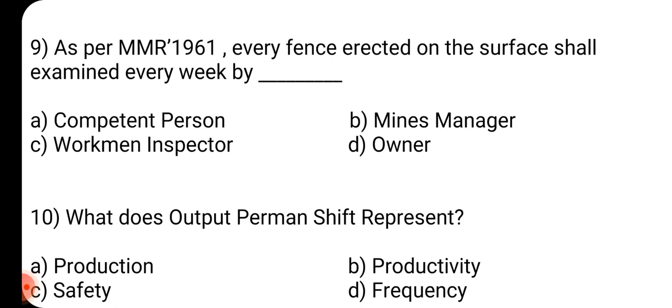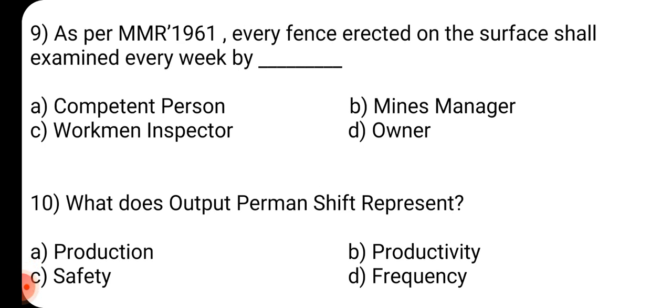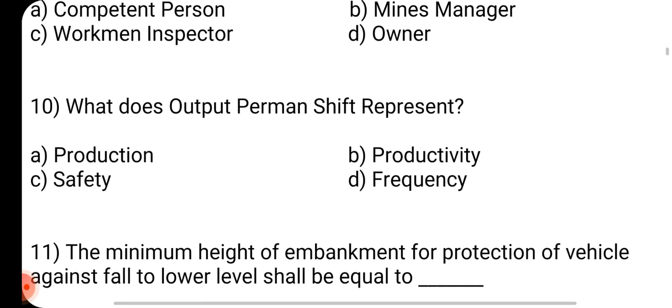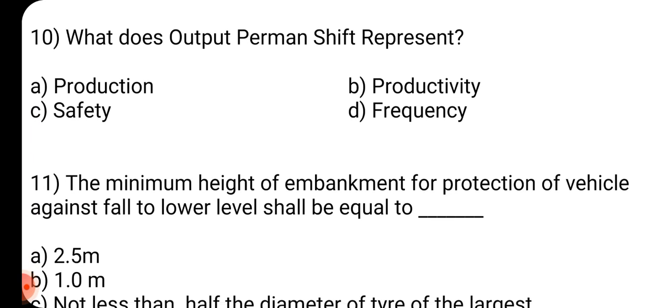Q9: As per MMR 1961, every fence erected on the surface shall be examined every week by dash. Answer is A: Competent person. Q10: What does output per man shift represent? Answer is B: Productivity.